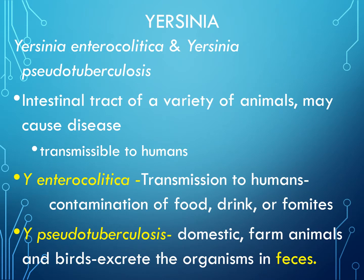The other members of the genus Yersinia include Yersinia enterocolitica and Yersinia pseudotuberculosis. These are transmitted to humans and are usually found in the intestinal tract of a variety of animals. Yersinia enterocolitica is transmitted to humans through contamination of food, drink, or even fomites. Pseudotuberculosis is transmitted to humans through the feces of domestic farm animals and birds.